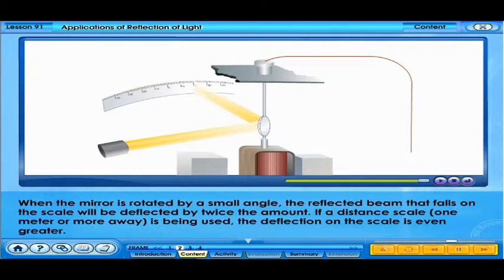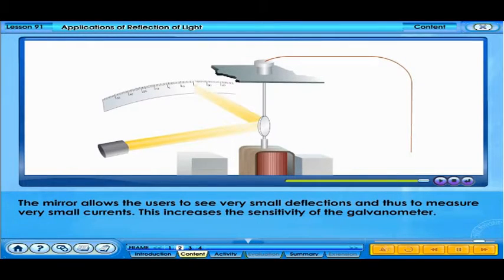When the mirror is rotated by a small angle, the reflected beam that falls on the scale will be deflected by twice the amount. If a distant scale, one meter or more is being used, the deflection on the scale is even greater. The mirror allows the user to see very small deflections and thus to measure very small currents. This increases the sensitivity of the galvanometer.